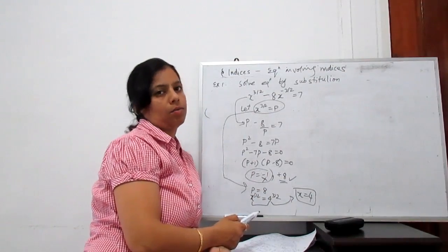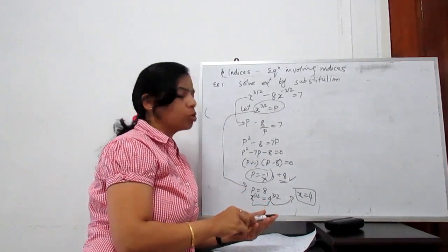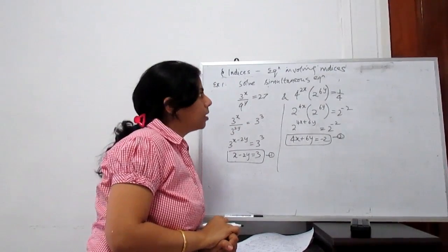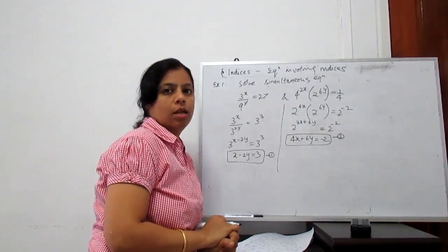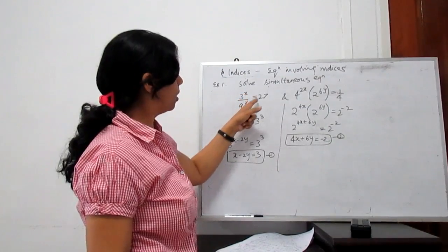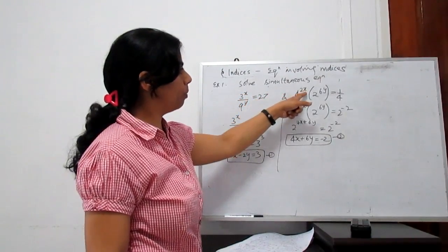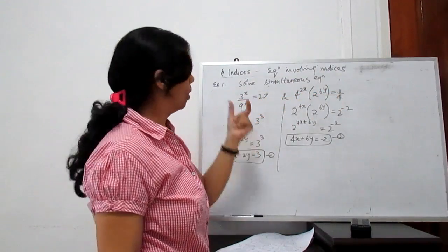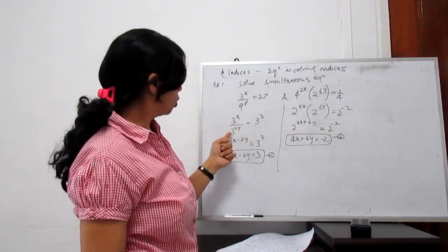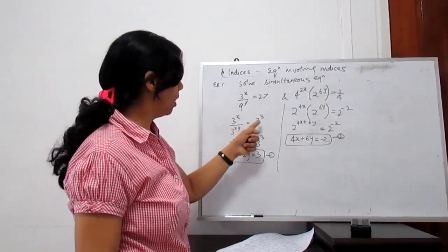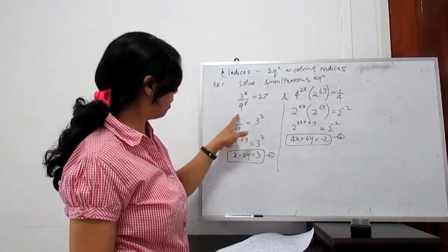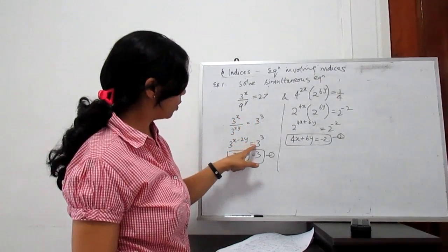So the solution of this equation is x equals 4. Now, how to solve simultaneous equations with indices. For example, the two equations are: 3 to the power x divided by 9 to the power y equals 27, and 4 to the power 2x times 2 to the power 6y equals 1 by 4. For the first equation, convert everything into base 3: 9 is 3 squared, so it becomes 3 to the power x minus 2y equals 3 to the power 3.